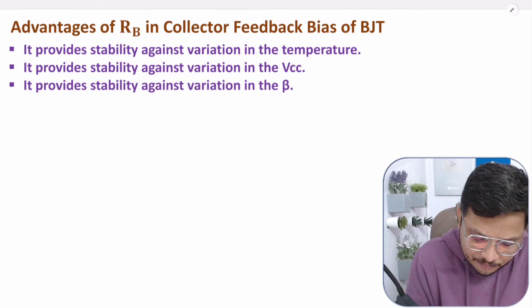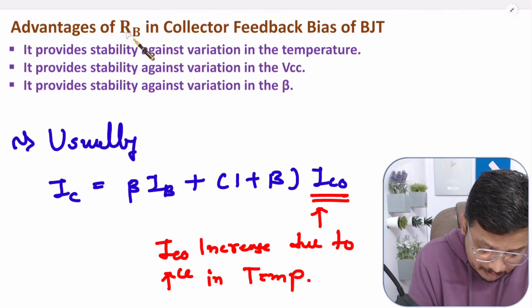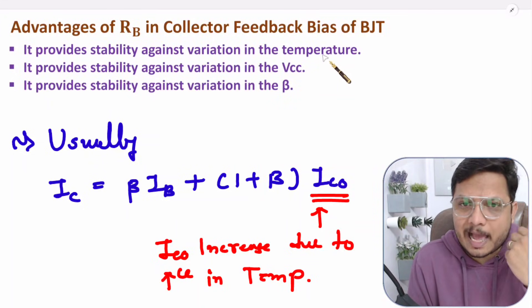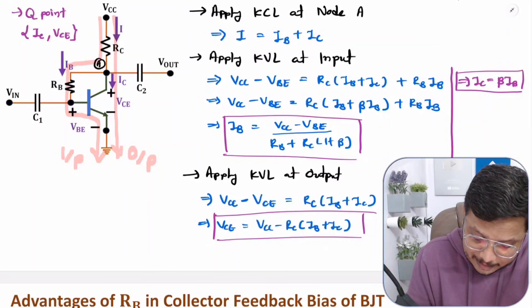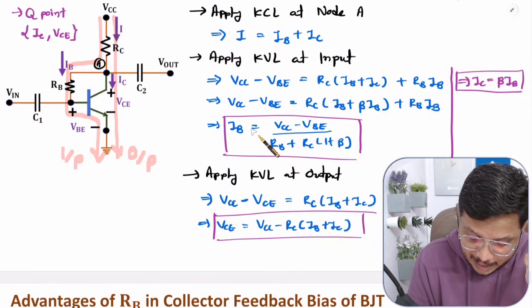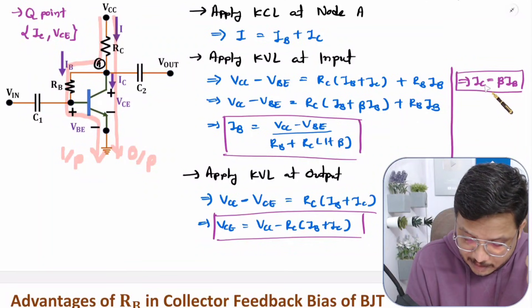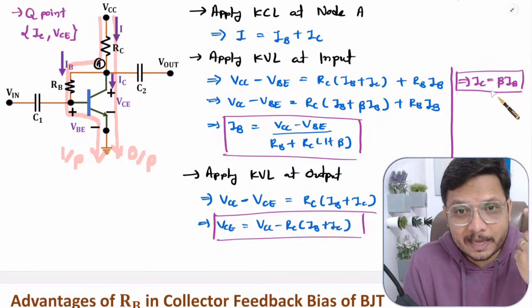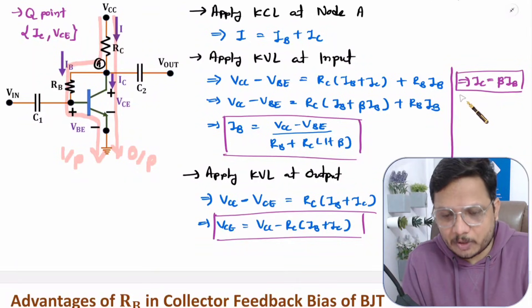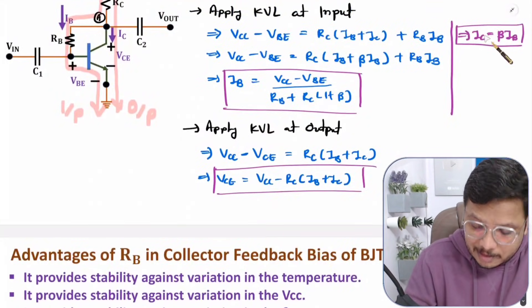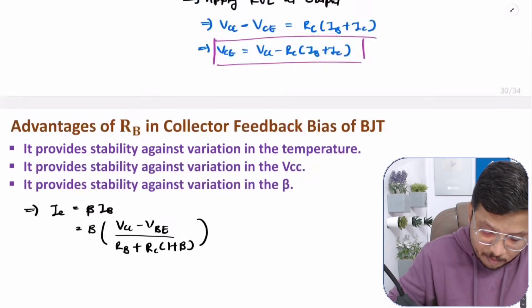Usually, if you increase temperature, collector current tends to increase. But here, because of RB, an increase in temperature does not result in a large increase in collector current. Normally increasing temperature increases beta, which would increase IC. However, looking at the equation IC = β·IB where IB = (VCC − VBE) / (RB + RC(1 + β)), we can see how IC can become independent of beta.